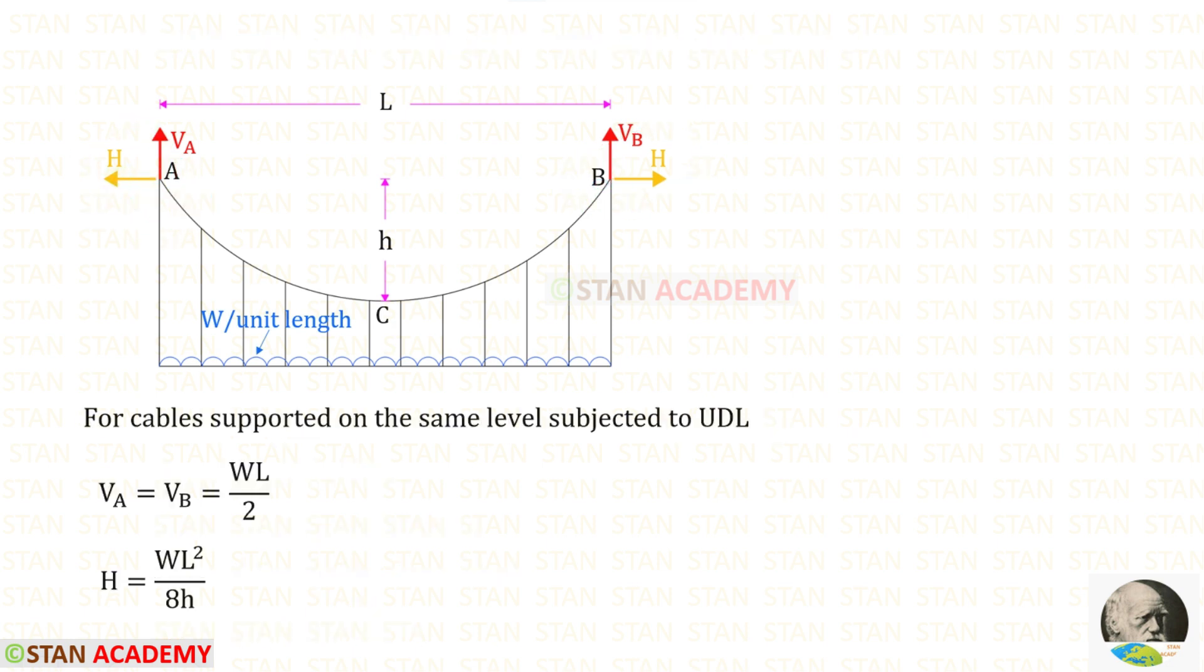We know that for the cables supported on the same level and subjected to uniformly distributed load, the formulas to find the vertical reactions Va and Vb is WL upon 2 and the formula to find the horizontal thrust H is WL square upon 8h.